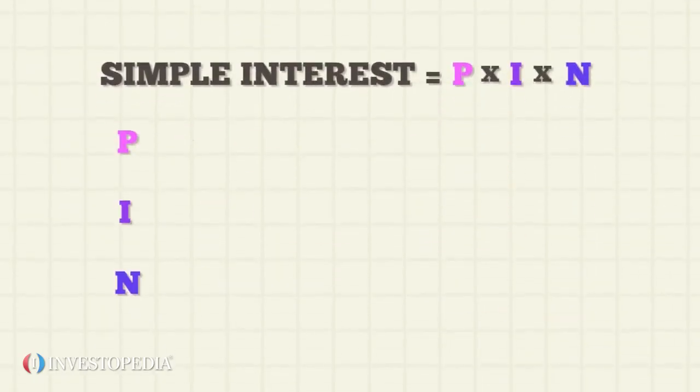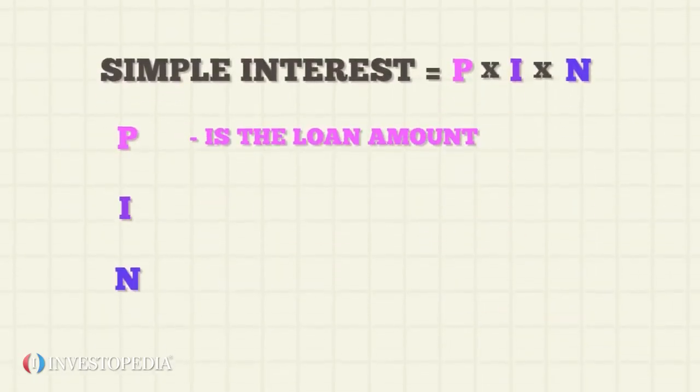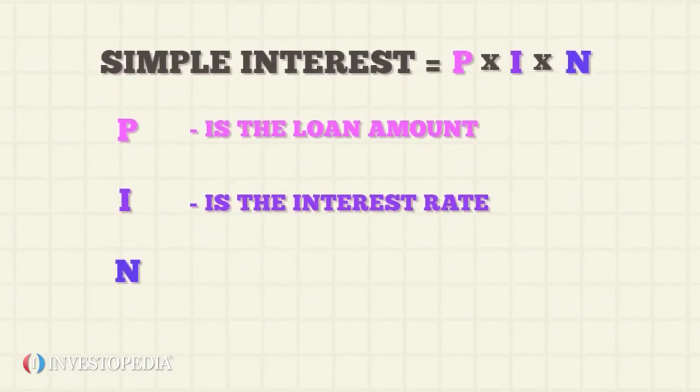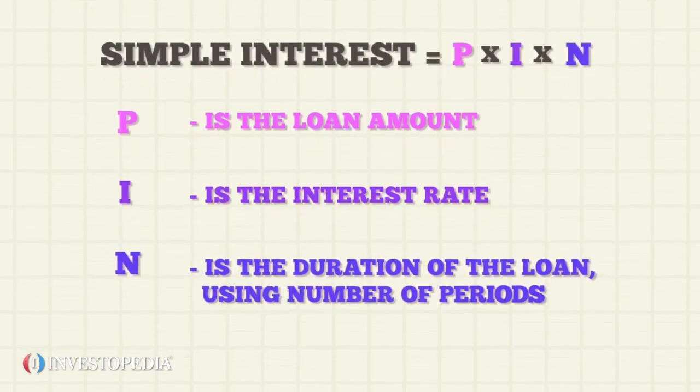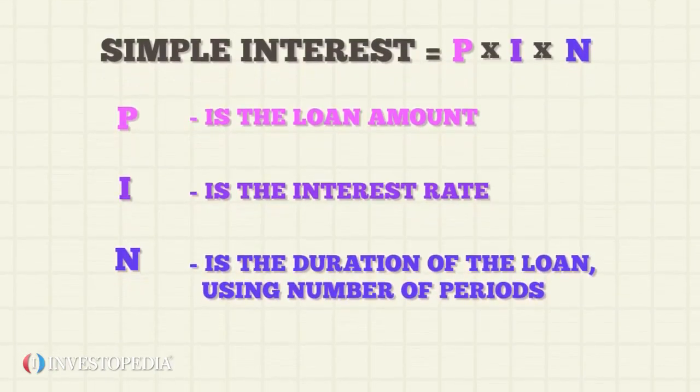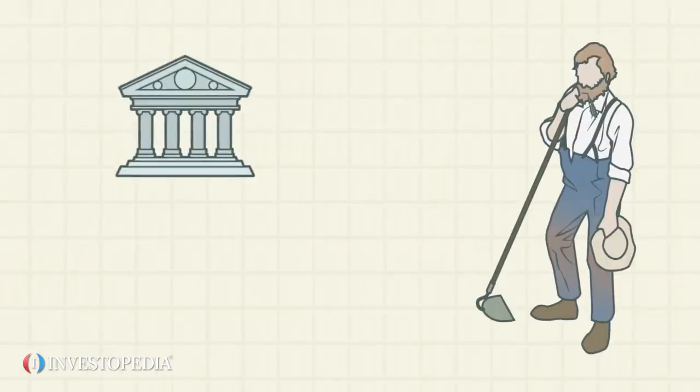Where P is the loan amount, I is the interest rate, and N is the duration of the loan using number of periods.